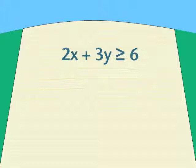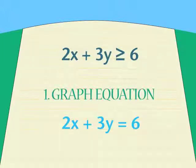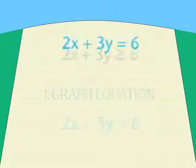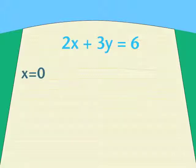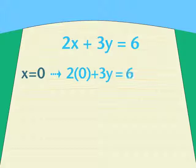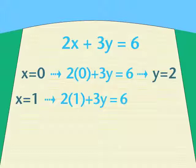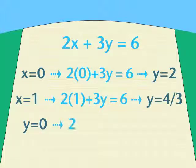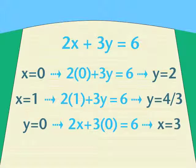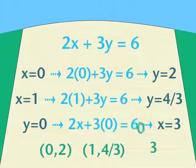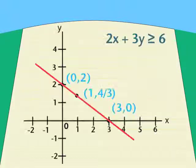Step number one: graph the inequality as if it were an equation. An inequality is not an equation, but treating it this way lets us plot the line we need for step two. I choose some points. To plot the graph of the equation, here are some of the points I used. If you choose different points, they should still be on the same straight line.